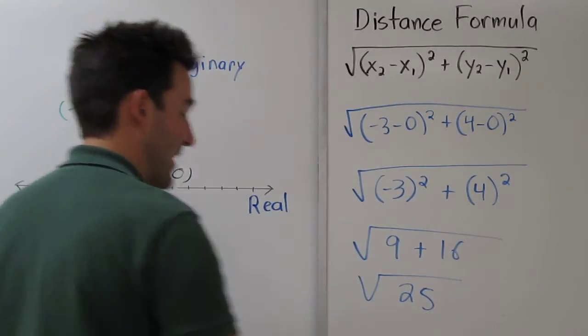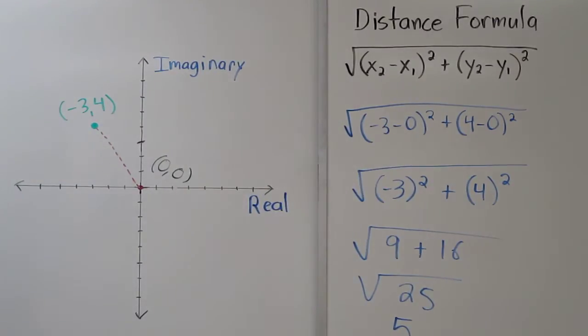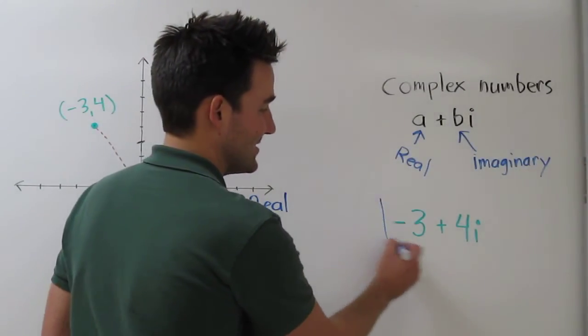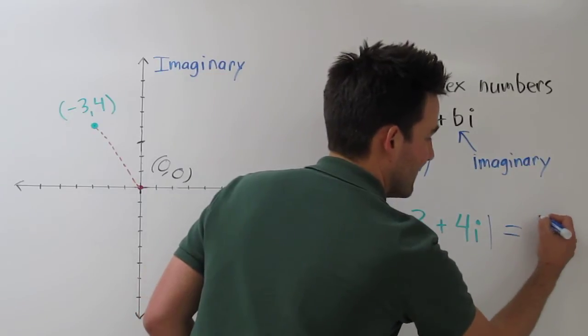The square root of 25 is 5. So the absolute value of this is 5.